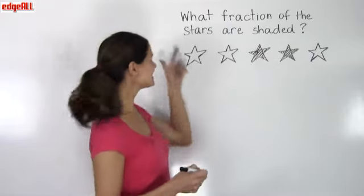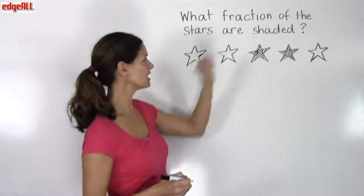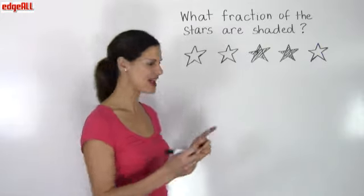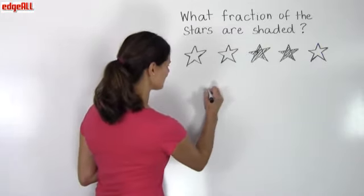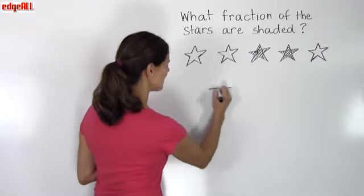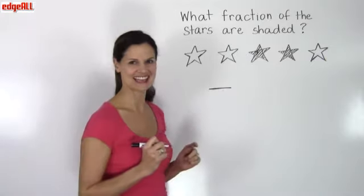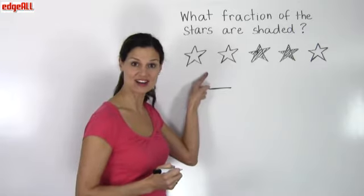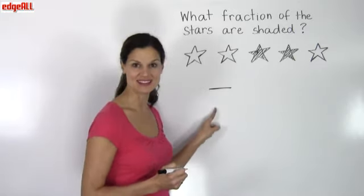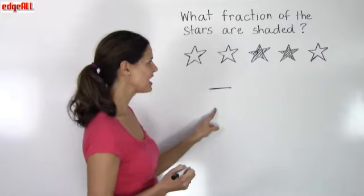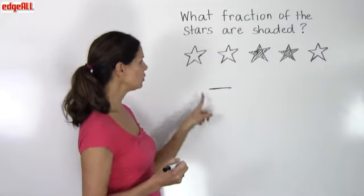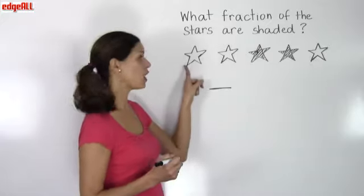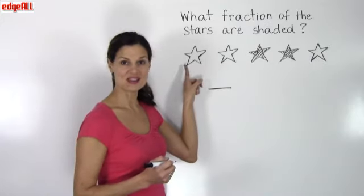Our question is asking us what fraction of the stars are shaded. So I know my answer is going to be in fraction form. So I'm going to write my fraction line, and I know I'm going to have a number on the top that's my numerator and a number on the bottom that's my denominator.